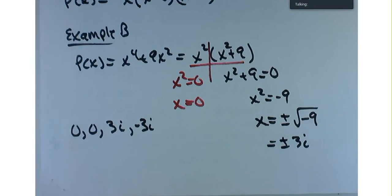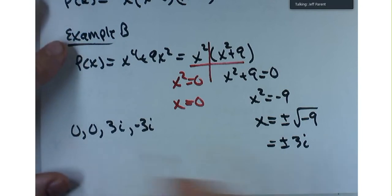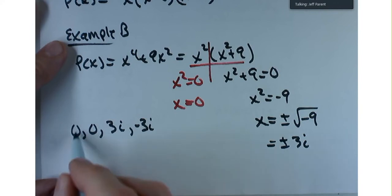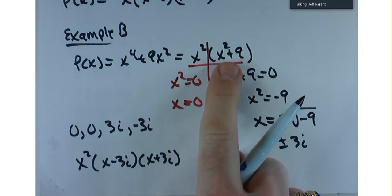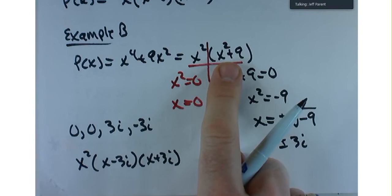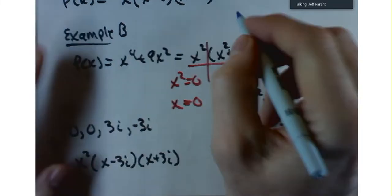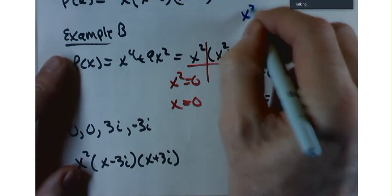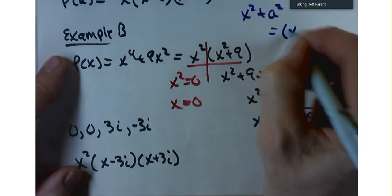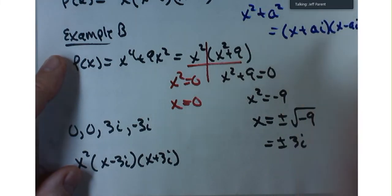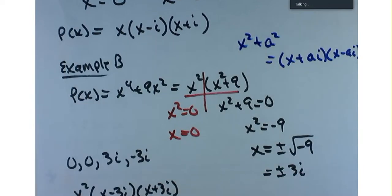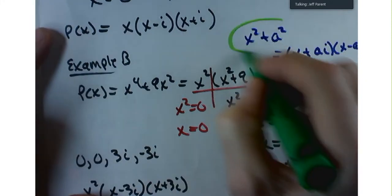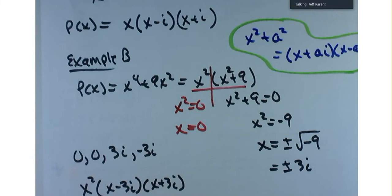If it asks you to list the roots for WebAssign, the roots would be 0, 0, 3i, and negative 3i. If it's asking you to write it as a product of linear factors, you write it as x times x times x minus 3i times x plus 3i. A shortcut: x squared plus a squared factors into x plus ai times x minus ai, giving solutions of plus or minus a times i.